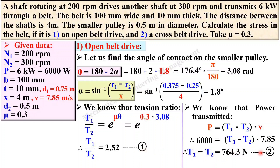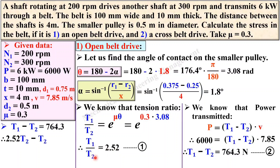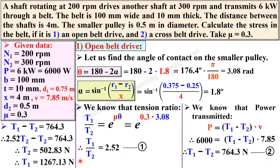From equation 1 and equation 2, we can find t1 and t2. From equation 1, t1 = 2.52·t2. Substituting into equation 2 and simplifying gives t2 = 502.83 N. Then from t1 = 2.52·t2, we get t1 = 1267.13 N.